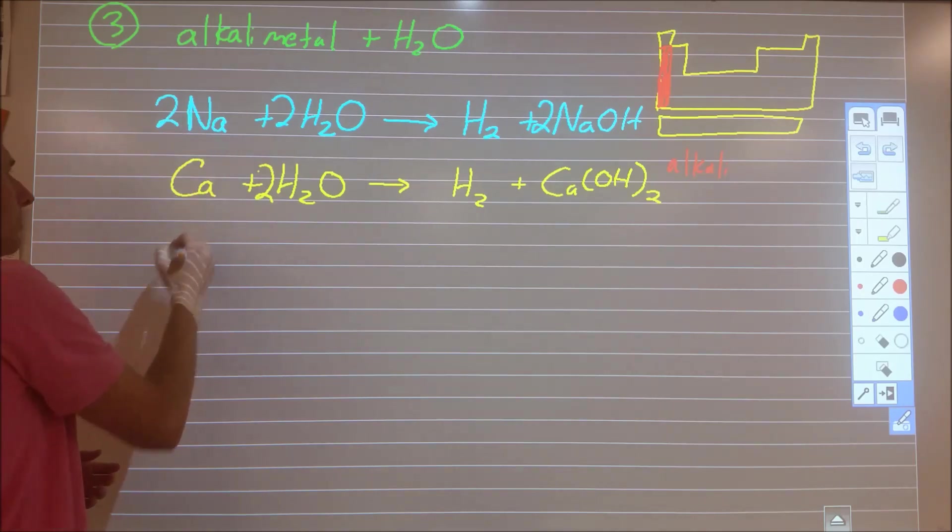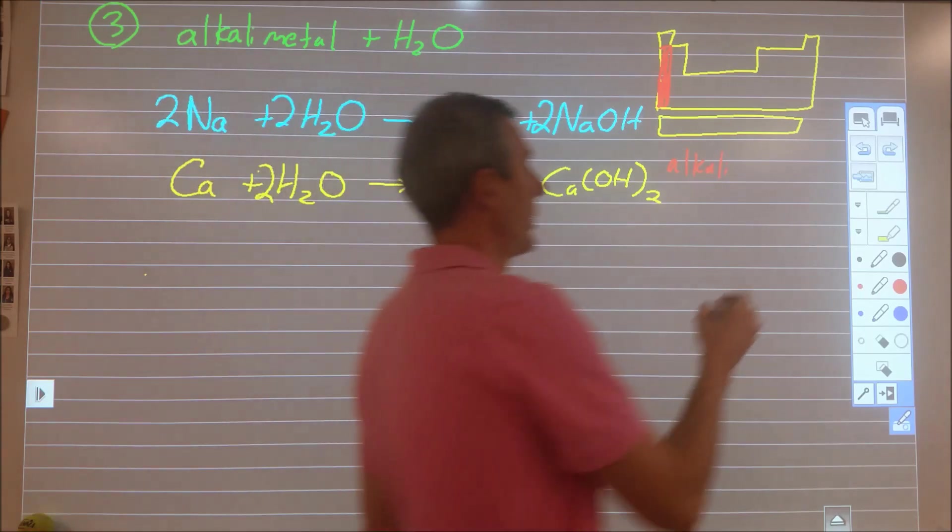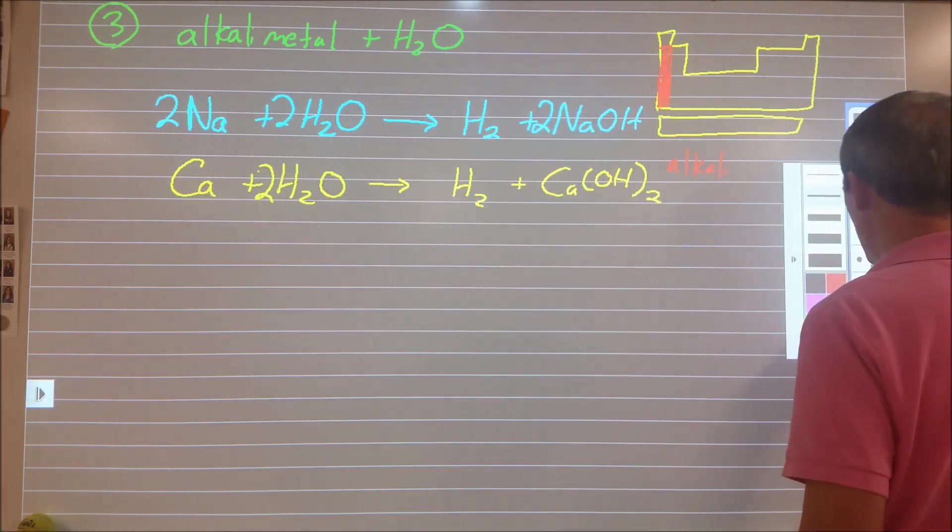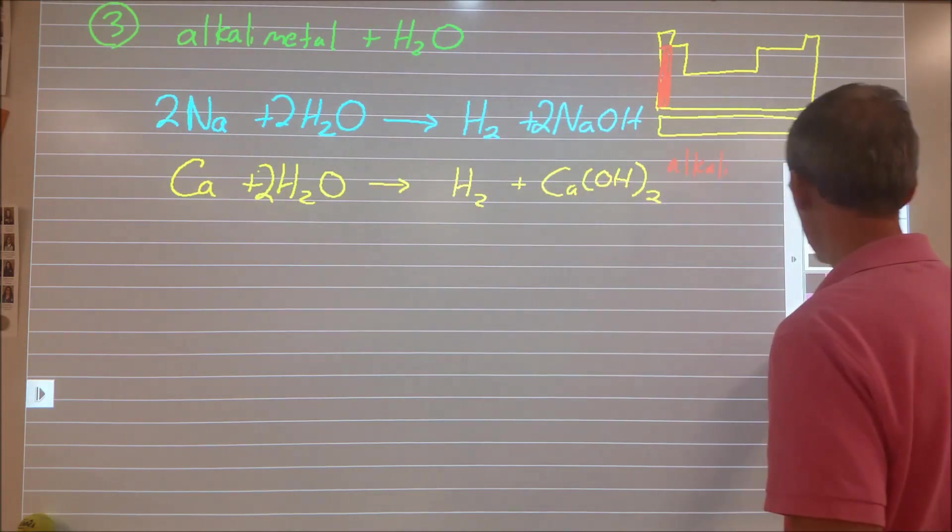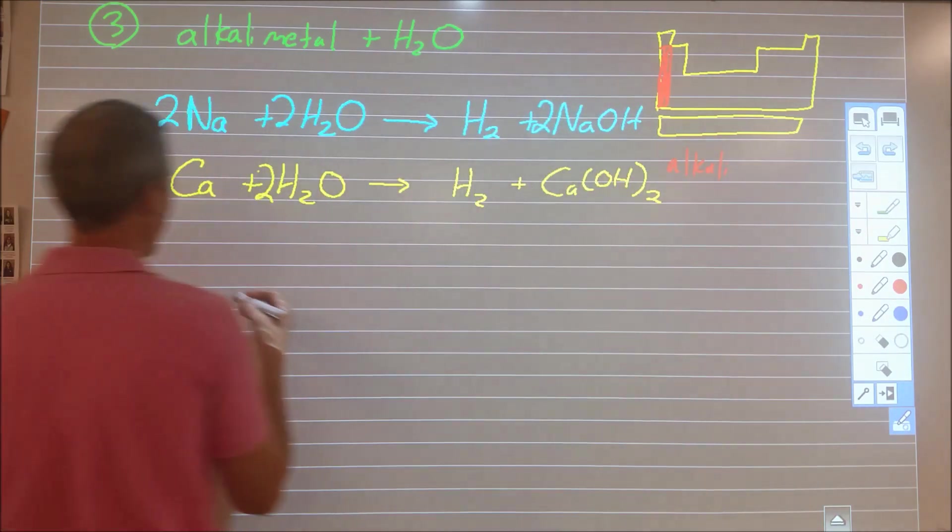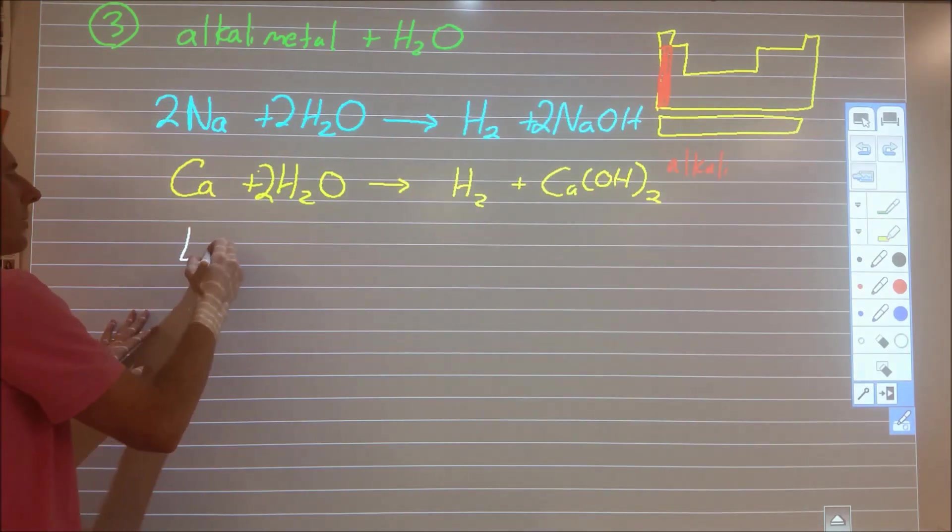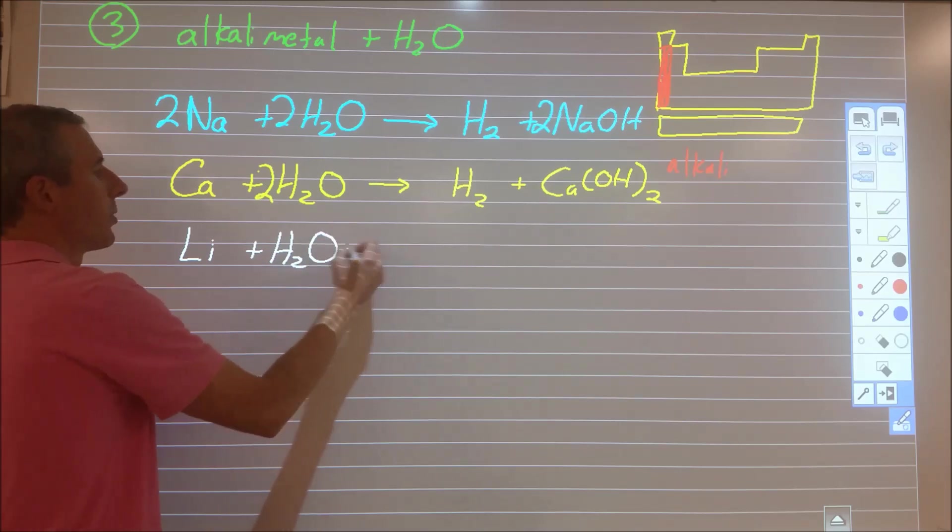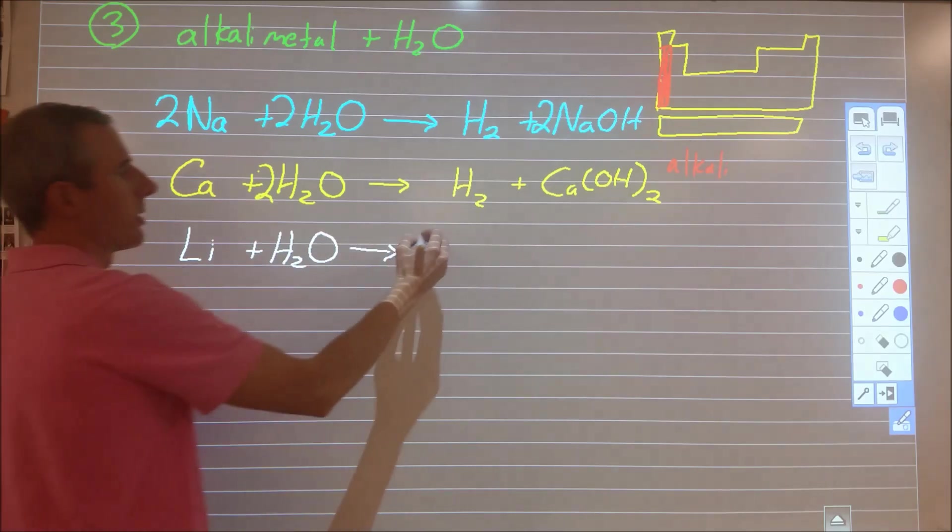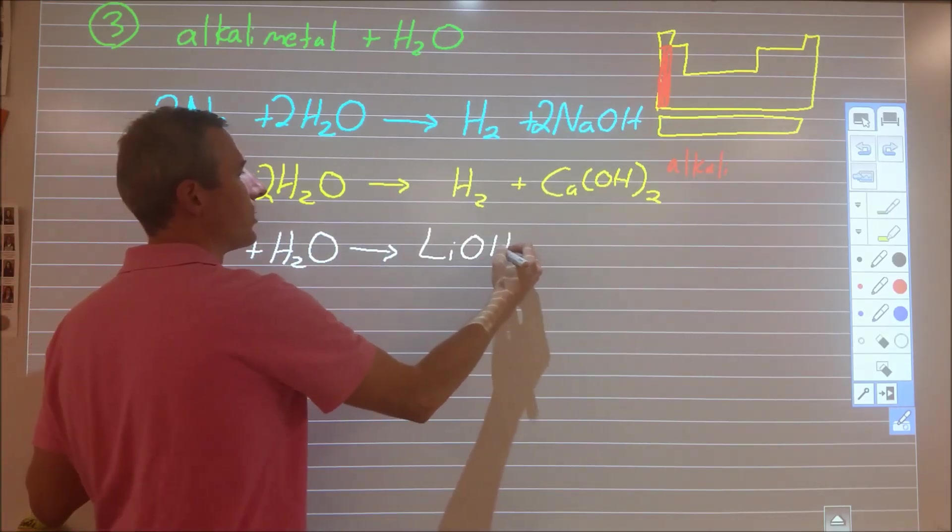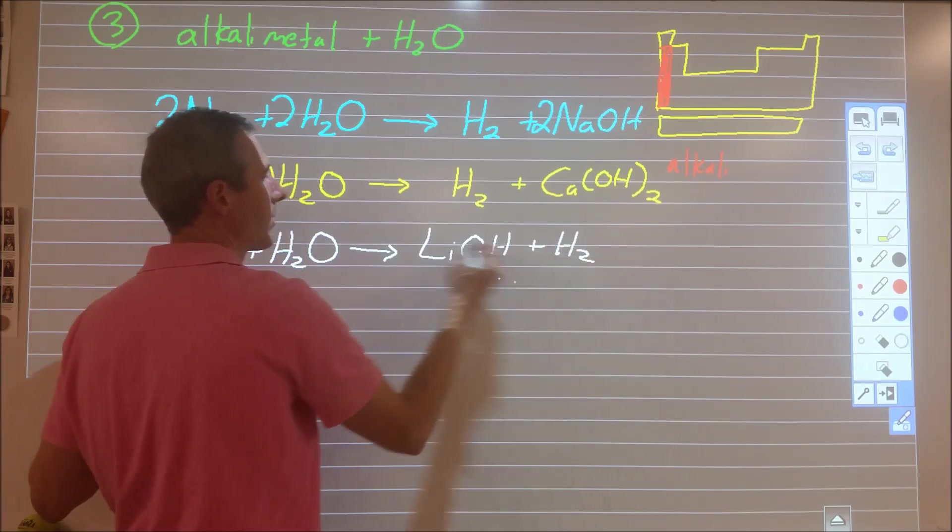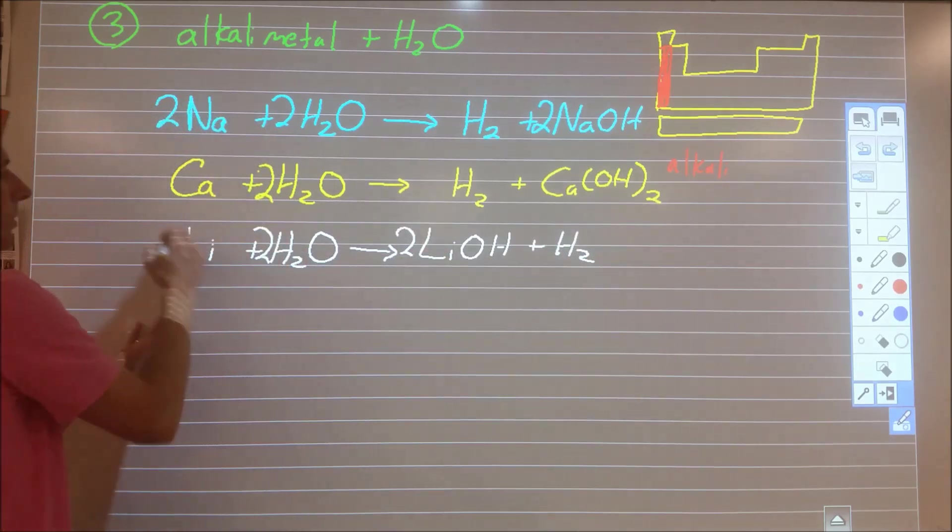Besides that, sodium, lithium, and potassium are really your only common alkali metals. All of the other ones are ones where you're looking at a situation where, you know, rubidium or cesium is just so rare. So lithium plus water, really if you know the sodium one and memorize that, it's an easy transcription into this. Here we're going to make lithium hydroxide, hydrogen gas. We're going to have a 2, a 2, a 2.